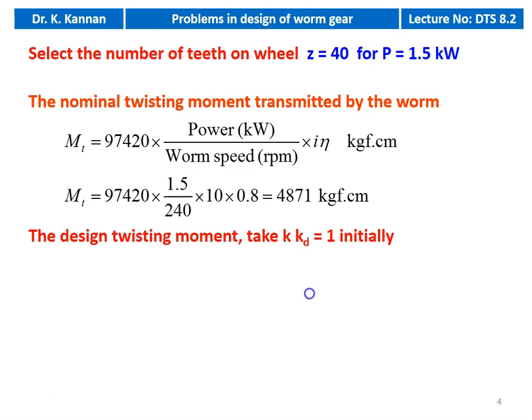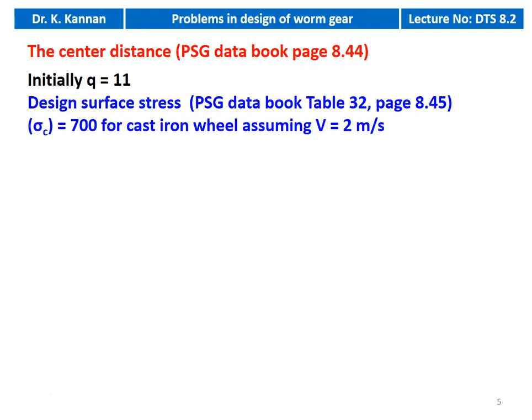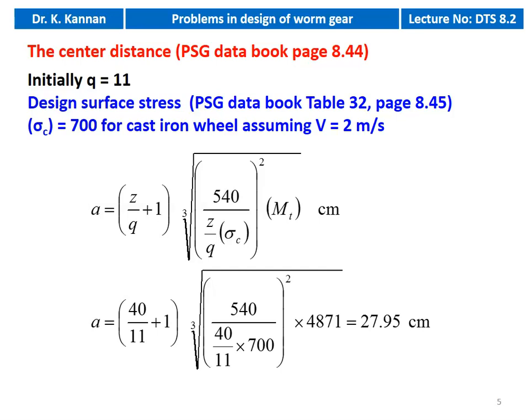Then we calculate the design twisting moment, taking KD = 1 initially, so design torque = 4871 kgf·cm. For center distance, we initially assume ratio Q = 11. The design surface stress from table 32, page 8.45: σc = 700 for cast iron wheel, assuming sliding velocity V = 2 m/s. Using the equation from page 8.44: A = (z/Q + 1) × ∛(540 / ((z/Q × σc)² × design torque)). Substituting: A = (40/11 + 1) × ∛(540 / ((40/11 × 700)² × 4871)) = 27.95 centimeter.